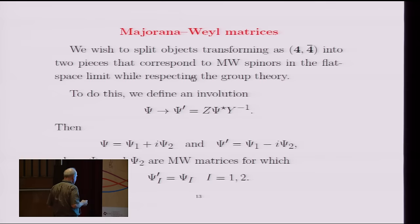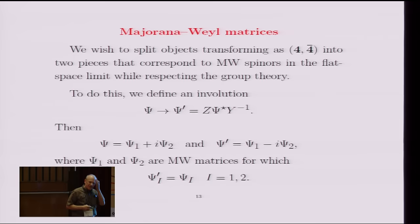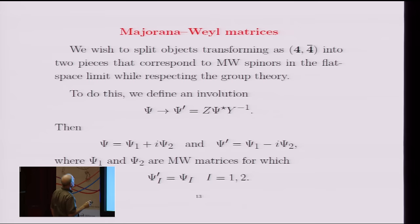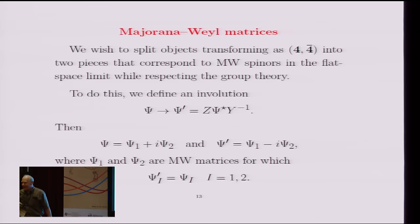Now, in flat space, the fermions were divided up into two Majorana-Weyl spinors of the same chirality. But here, this matrix theta transforms as 4 times 4-bar under the SU(2,2) times SU(4). And so the question is, can we divide this up into two pieces that we would call Majorana-Weyl? And this would just be the thing that was Weyl but not Majorana.